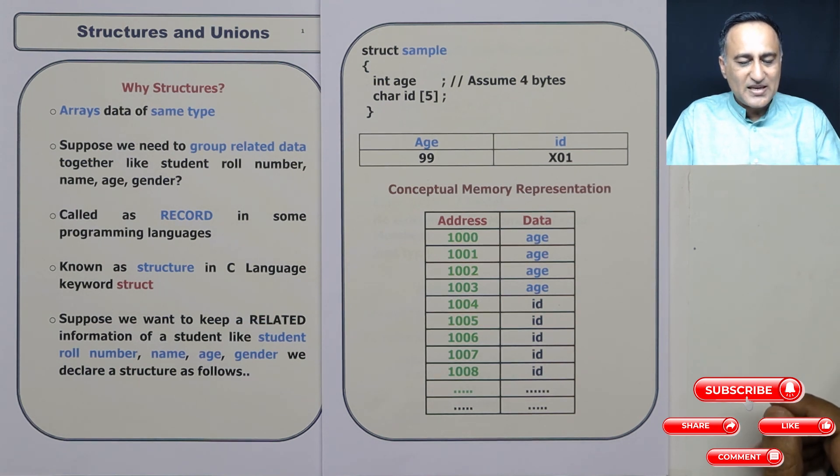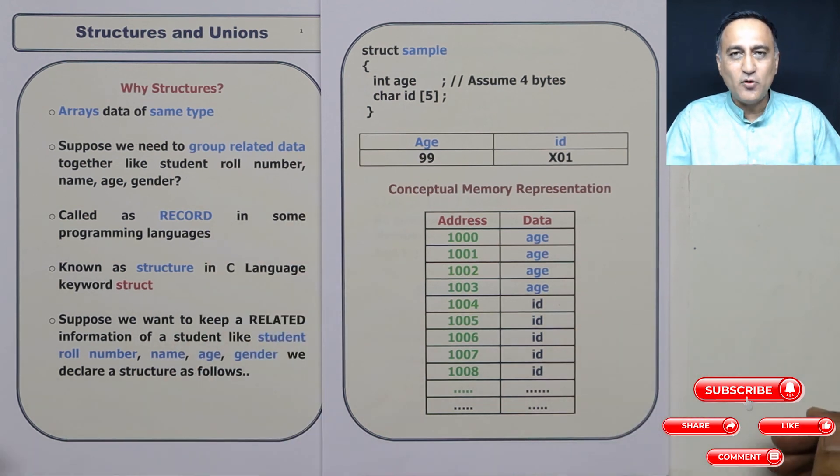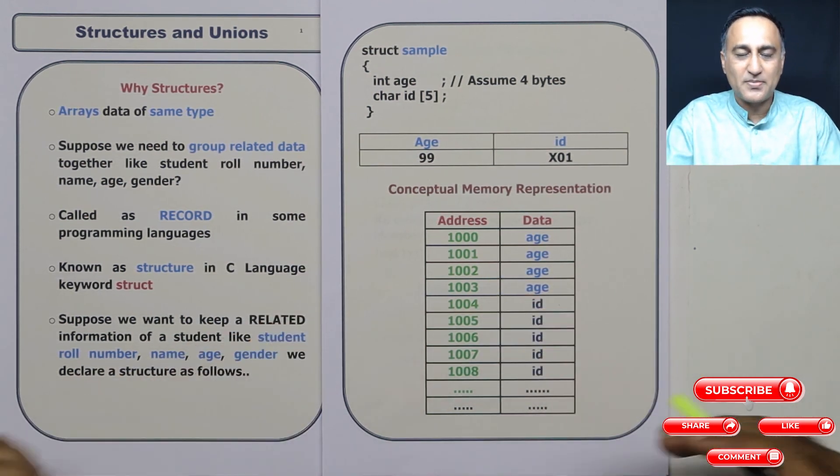Now in C structures are created or declared using this keyword called as struct. And this is a sample representation of how structures will look in main memory. This is a conceptual representation.